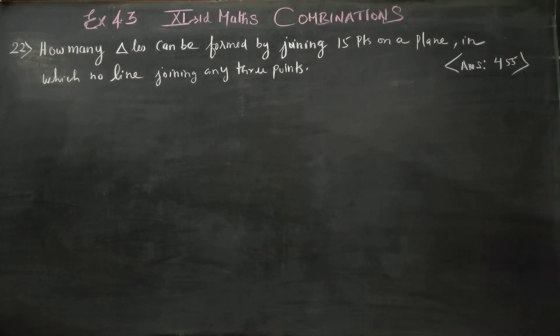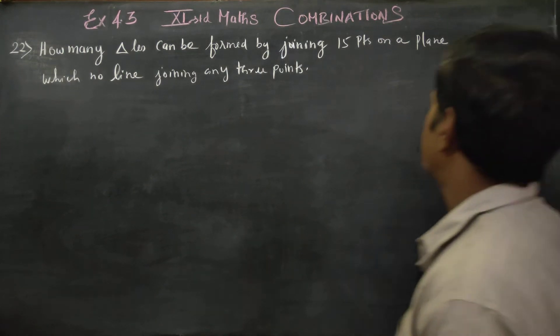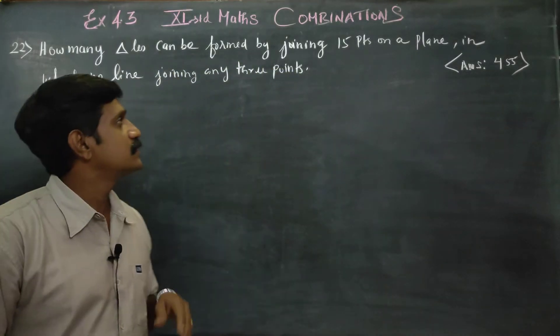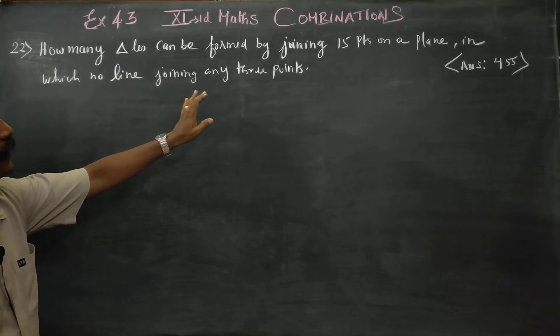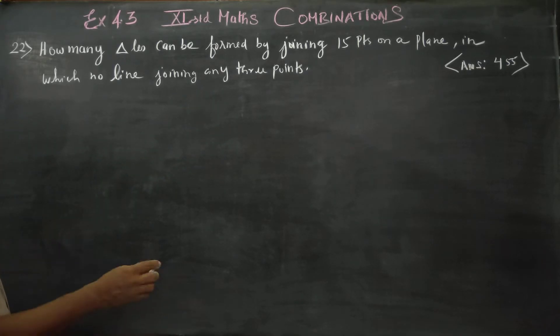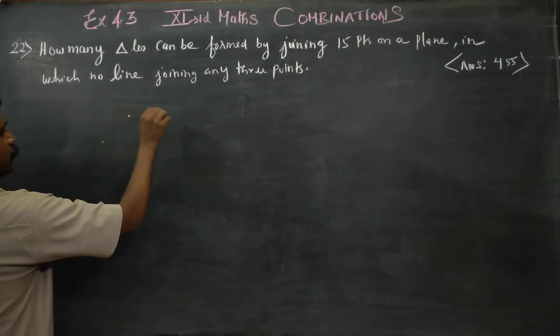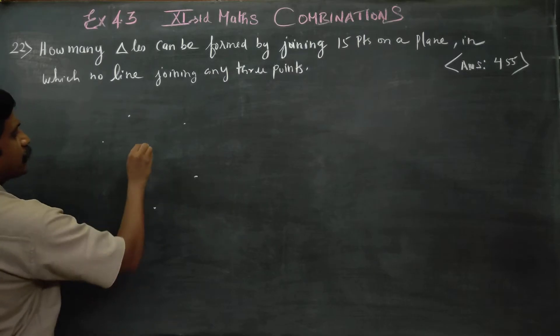Hello 11th standard students. How many triangles can be formed by joining 15 points on a plane in which no line joins any three points? What is the meaning of this? 15 points means non-collinear points - no three points will be on a straight line. You can't join a straight line using three points.